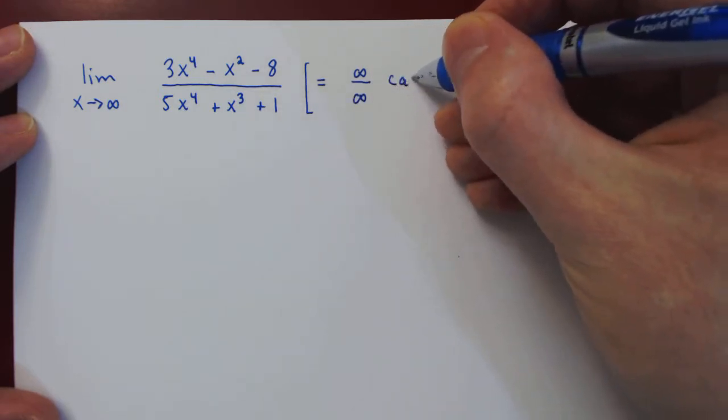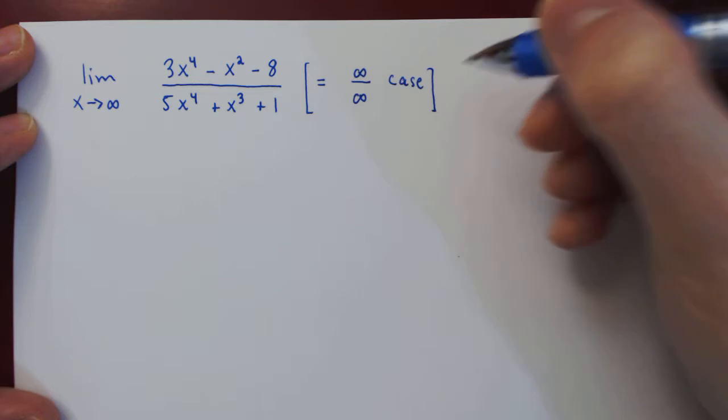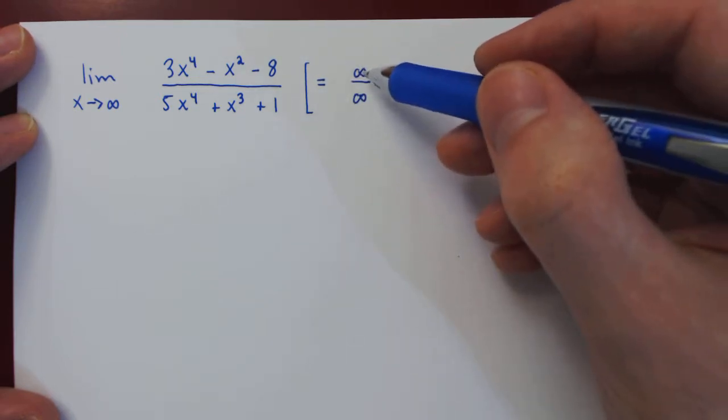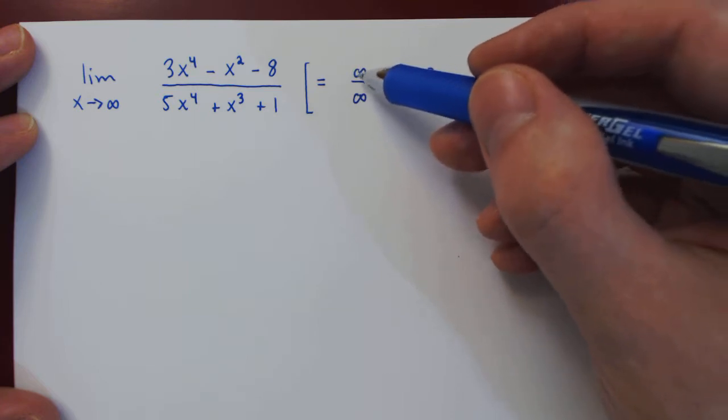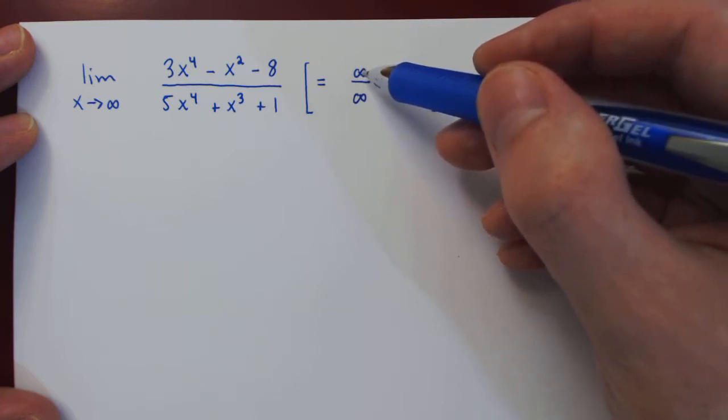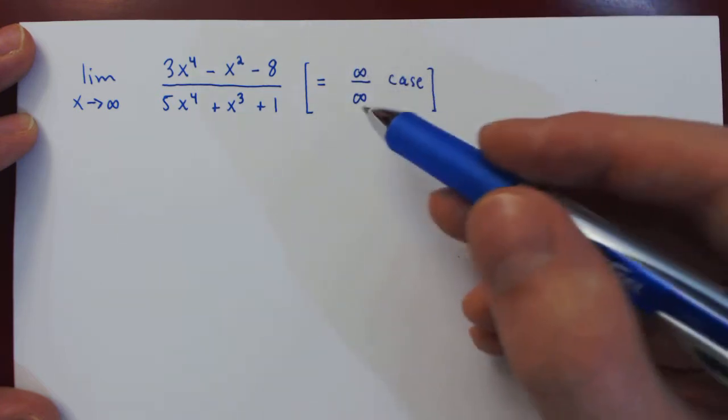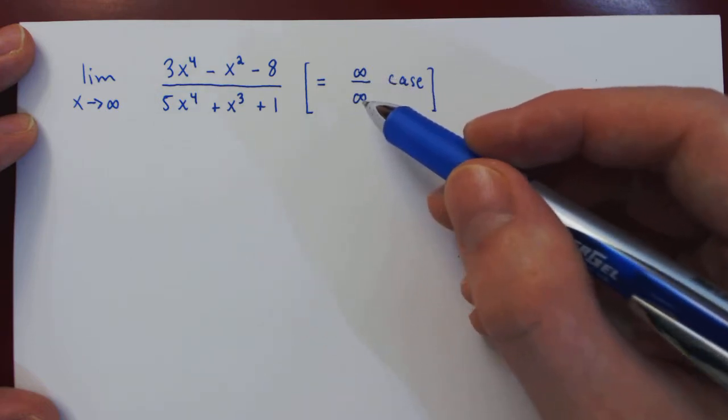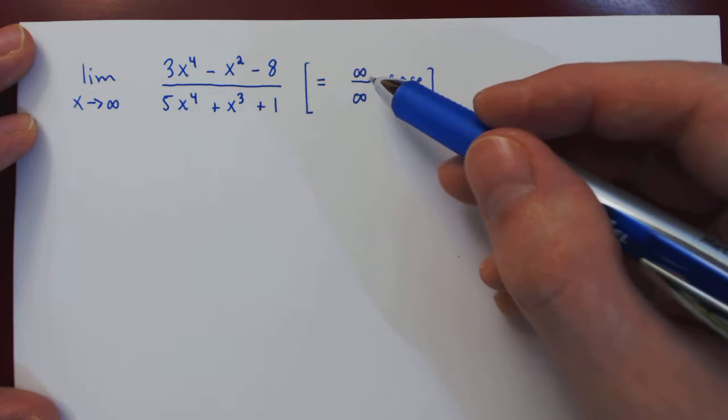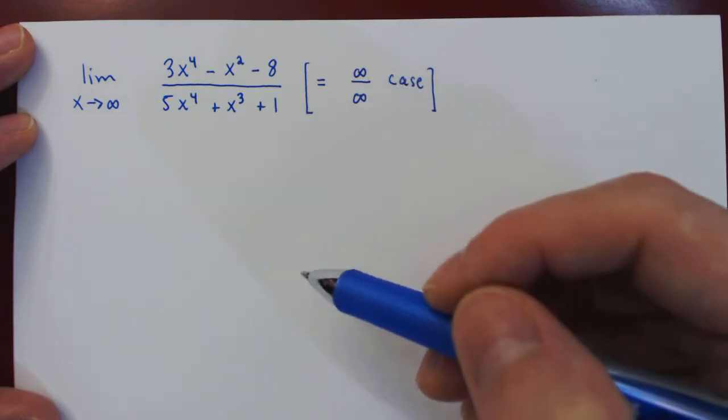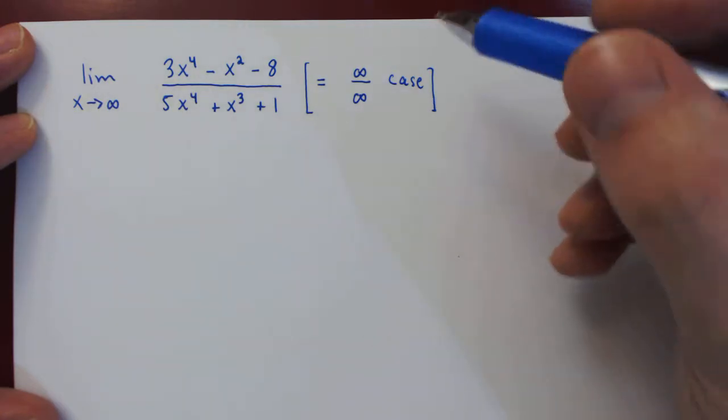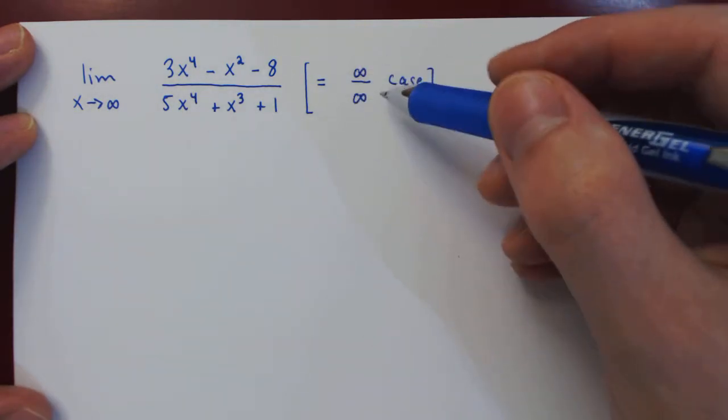So we have an infinity over infinity case, and that is a non-trivial case, as we have a fraction where the numerator gets larger and larger, which tries to make the whole fraction larger, but the denominator also gets larger and larger, which tries to make the whole fraction smaller and smaller. So it's not clear from this case what the limit might be. We now have an indeterminate case.